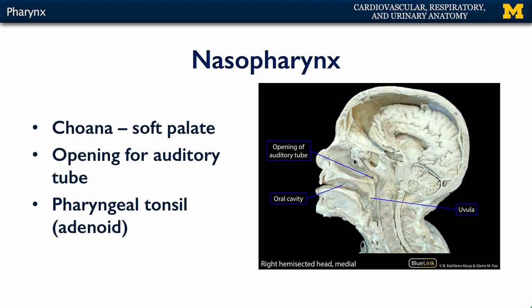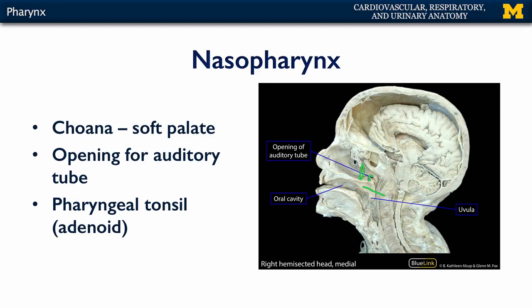Let's take a look at the nasopharynx. The nasopharynx begins at the choanae, which are the internal nares, and ends at the soft palate. Contained within the nasopharynx is the opening for the auditory or pharyngotympanic tube. The pharyngotympanic tube is a cartilaginous and bony structure that connects the pharynx with the middle ear. If you were to pinch your nose and push air, that would provide an opening into your pharyngotympanic tube — you would hear a little crinkle, which is equilibration of pressure. I don't recommend doing that, and certainly not forcefully.